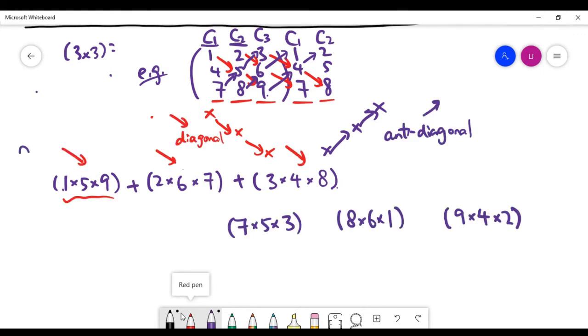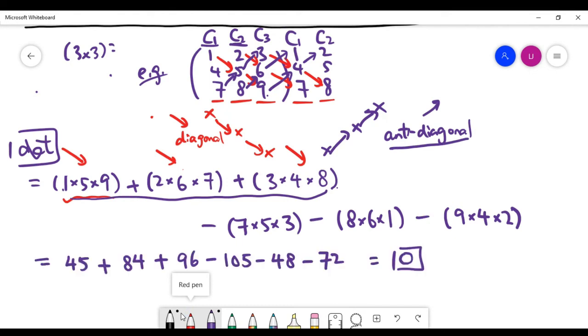And now the determinant, I claim, the value of the determinant is going to be the addition of all the products for the diagonals minus the products for the three anti-diagonals, like this. And it's going to be the determinant. Let's write it down here. And the determinant of this matrix is actually zero.